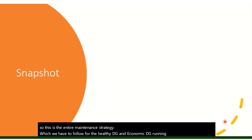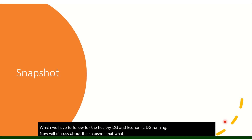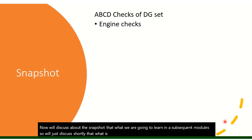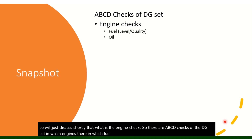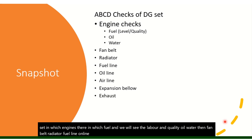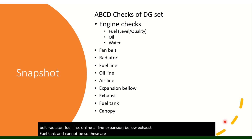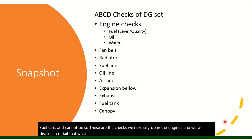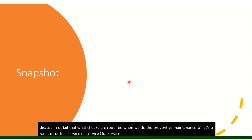Now let's look at a snapshot of what we will learn in subsequent modules. For engine checks, the A, B, C, D checks cover: fuel and oil levels and quality, water level, fan belt, radiator, fuel line, airline, expansion below, exhaust, fuel tank, and canopy. We will discuss in detail what checks are required during preventive maintenance of the radiator, fuel service, oil service, air service, and other engine components.